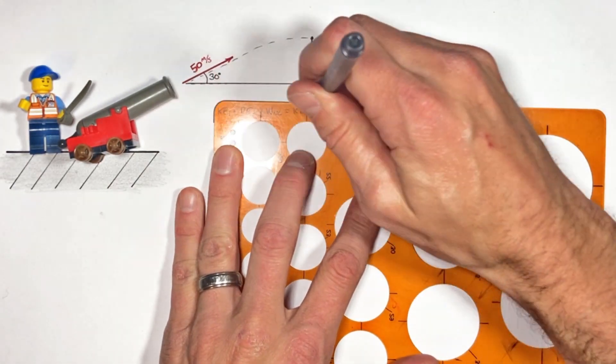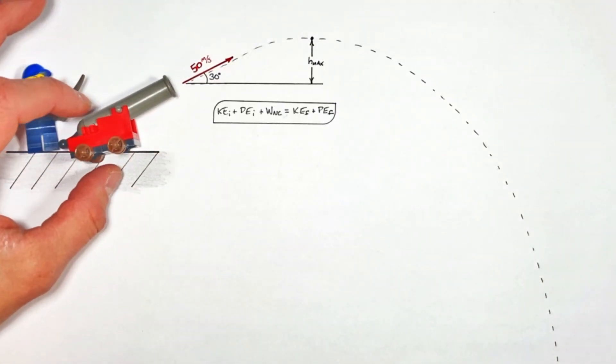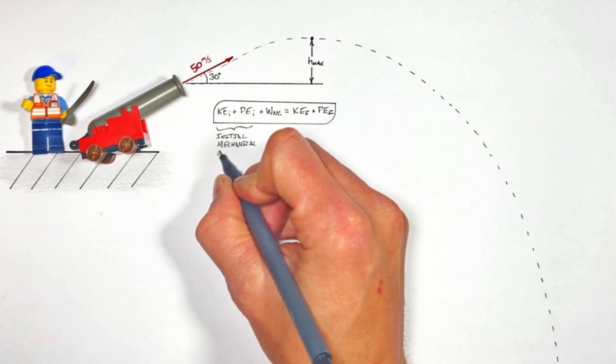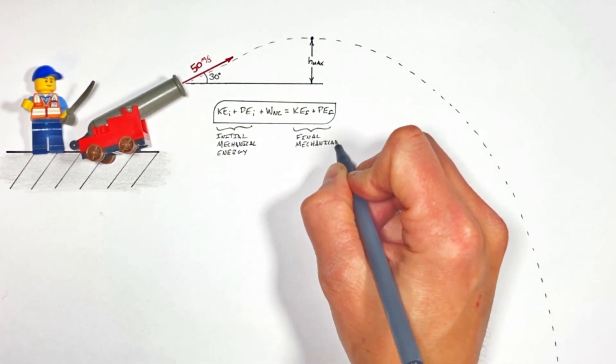The conservation of energy says that in any situation, the initial mechanical energy of a system plus the non-conservative work done on that system is equal to the final mechanical energy of that system.